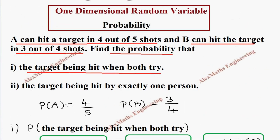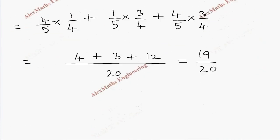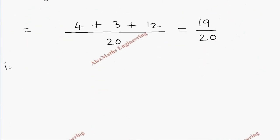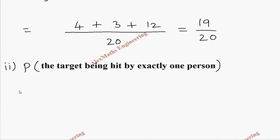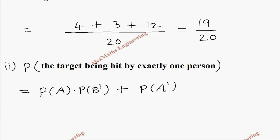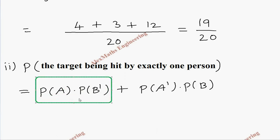Now the second part: the target being hit by exactly one person. Target hit by exactly one person covers two cases: A hits the target and B does not hit the target, or A does not hit the target but B hits the target. These are the two cases where exactly one of them hits the target.